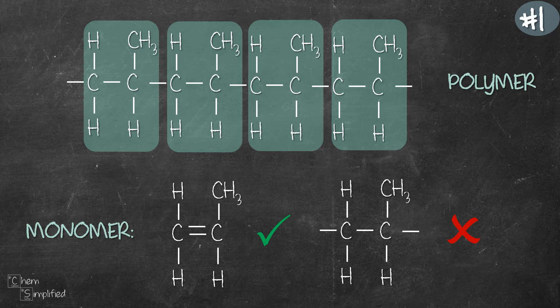So if you want to double check your work, what you can do is place the monomers next to each other and then draw out the structure of the polymer. Compare it with the one given in the question and you'll know if you got it right or wrong.